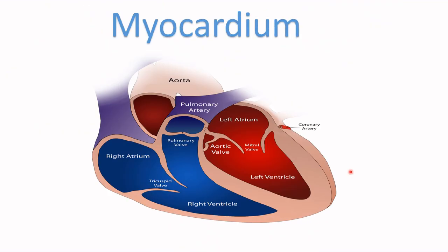Now let's see the myocardium, or cardiac muscles, and its layers. The outer part of the heart is called the epicardium. The one in the middle is called the myocardium, which is very thick compared to the others. The one in the inner part, the one that covers the inner part of the heart, is called the endocardium. These are the three layers of the wall of the heart.